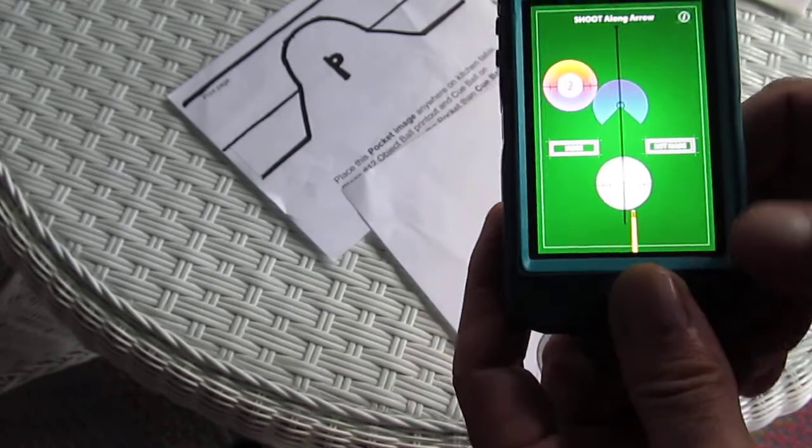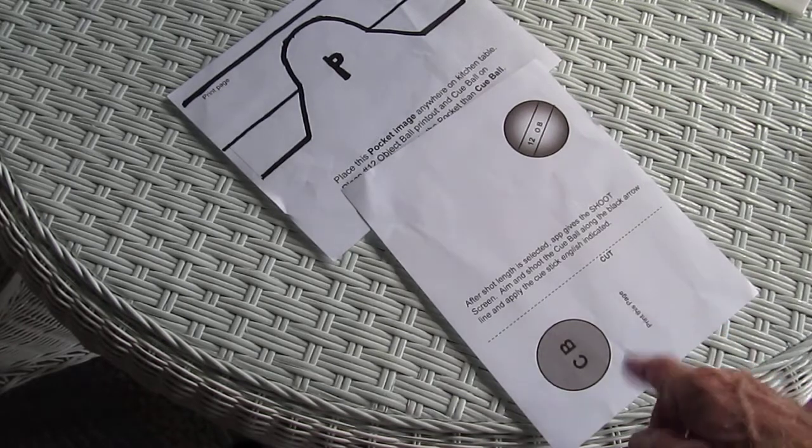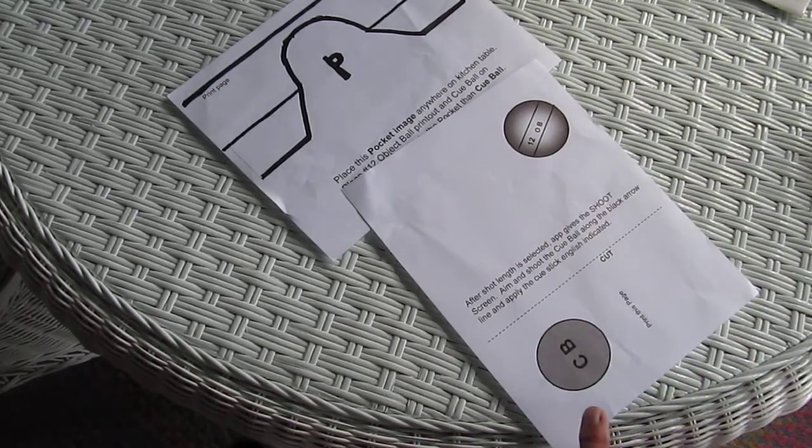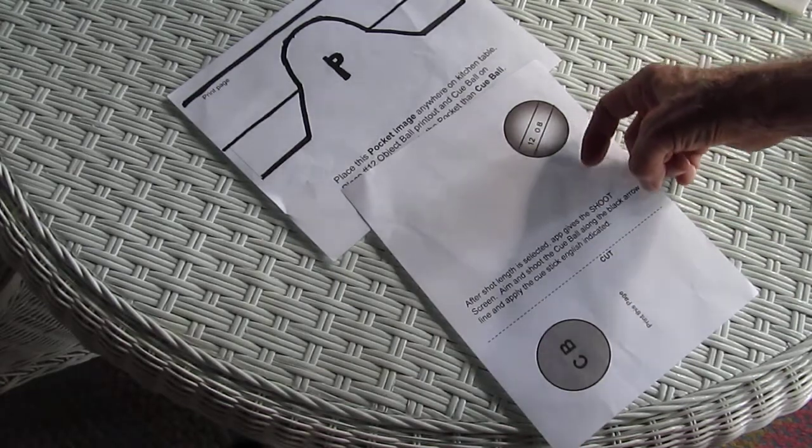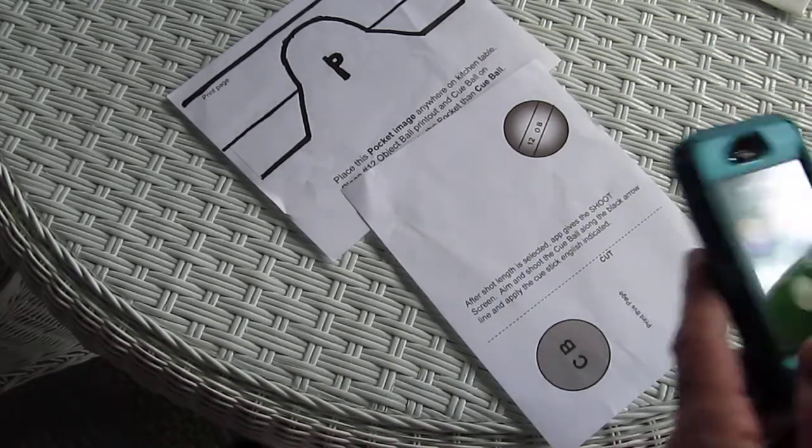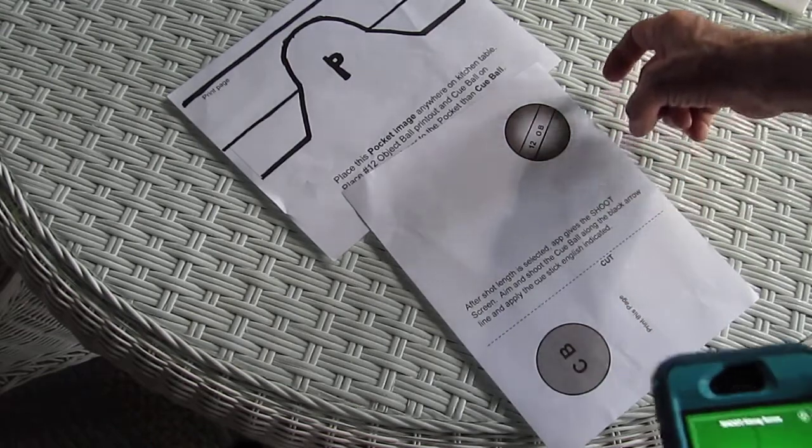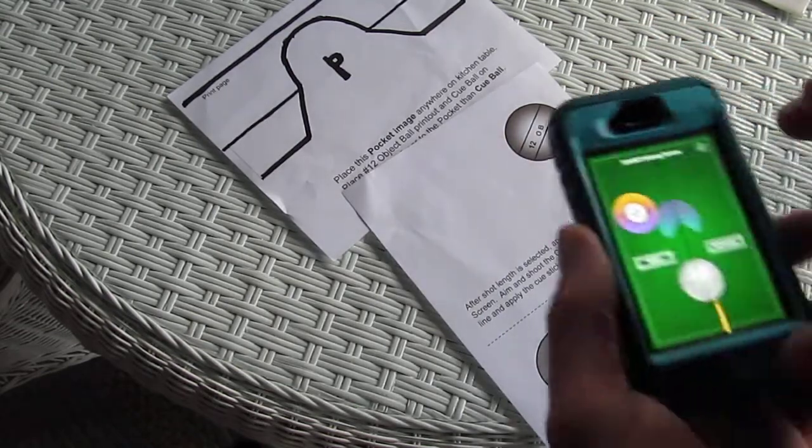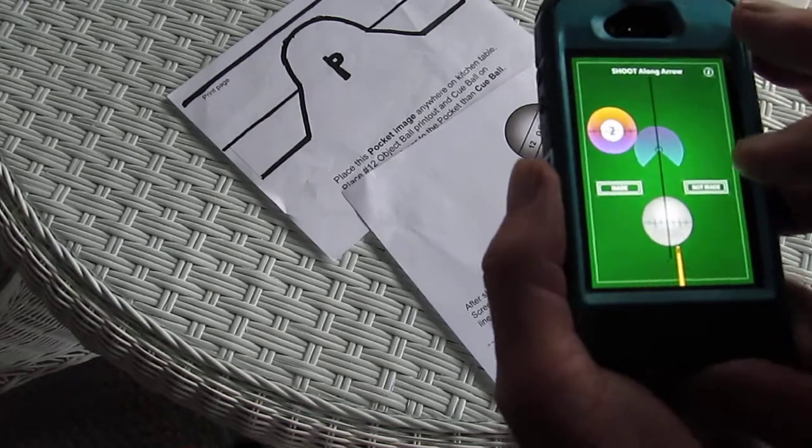So I will put the phone down and then with my cue stick I will whack the ball along this path so it passes about right through here and then the ball will go in. It takes a little practice to be able to shoot the cue ball along the prescribed line because the app tells you where to shoot but you have to make the shot.